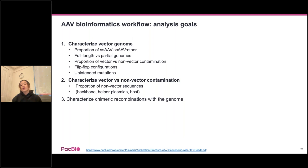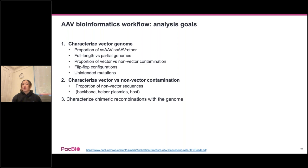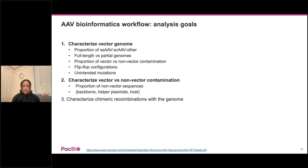Now that I've shown what the report looks like, let's discuss how we arrive at these characterizations. The overarching goal of the bioinformatics analysis is threefold: characterize the vector genome — the proportion of single-strand vs. self-complementary, full-length vs. partial, vector vs. non-vector, flip-flop configurations, and unintended mutations. Within vector vs. non-vector, we're interested in the distribution of sequences mapping to the backbone, helper, rep cap, and host genome. With full-length remapping, we can also characterize chimeric recombinations between all these genomes.